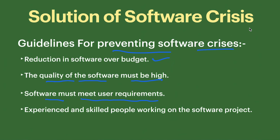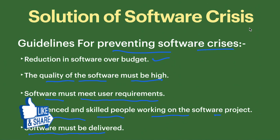Another guideline is that experienced and skilled people should be working on the software project — if skilled people are working, the software will always be good because they already have strong knowledge of their domains. A very important point is that software must be delivered. If the software is not delivered to the client, it is a software crisis because all the development cost is wasted. So software must be delivered.